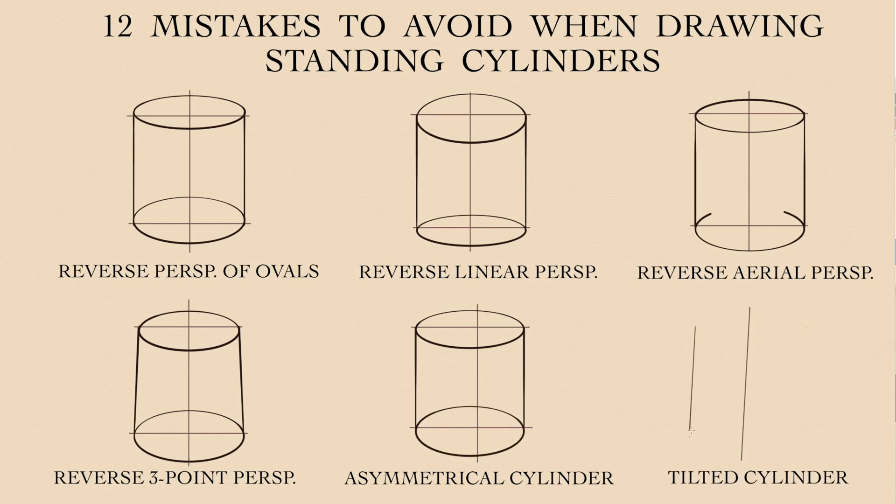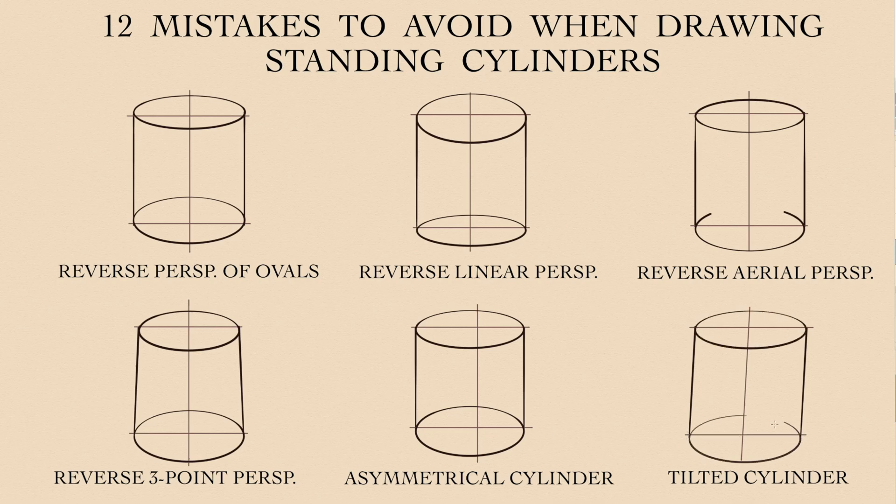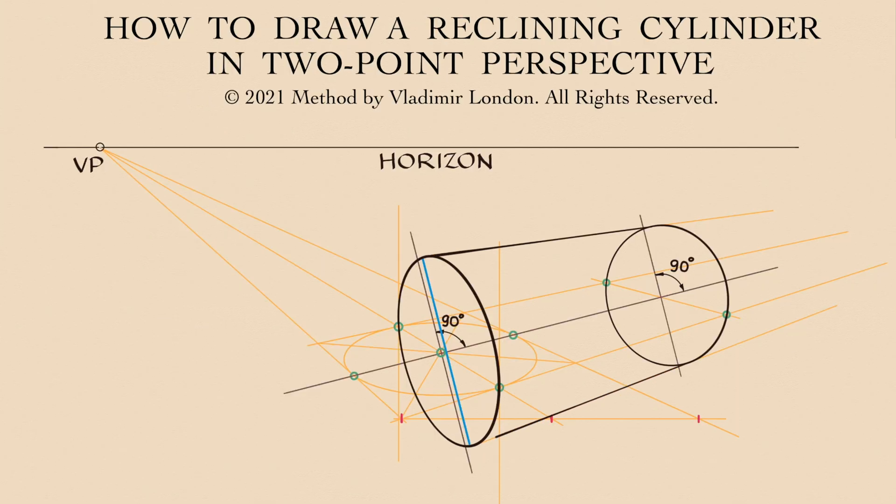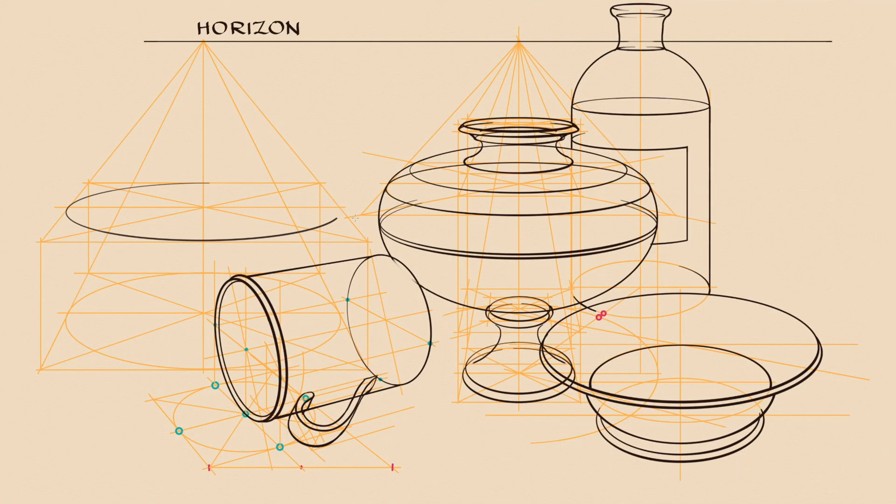And finally, the last error is a tilted cylinder. I will exaggerate its inclination. I hope this list of twelve mistakes was helpful. Drawing cylindrical objects requires a special knowledge of ovals, perspective and construction.